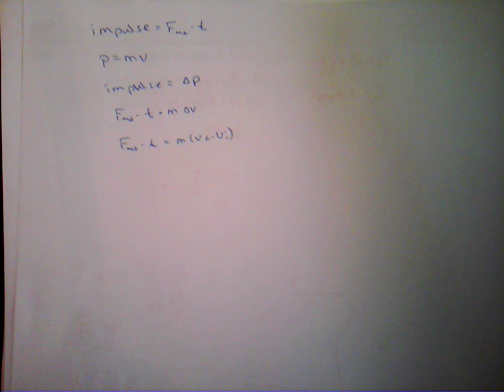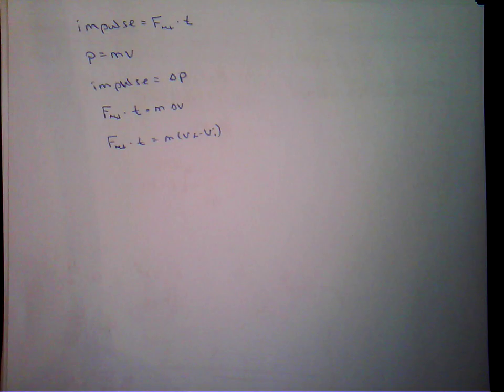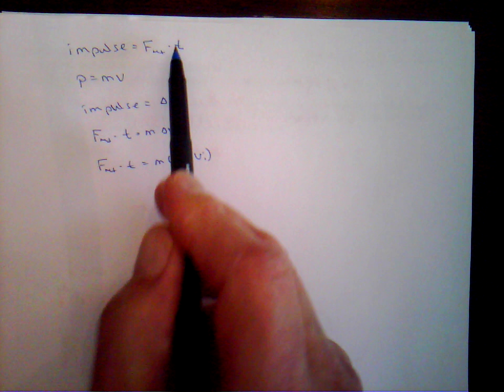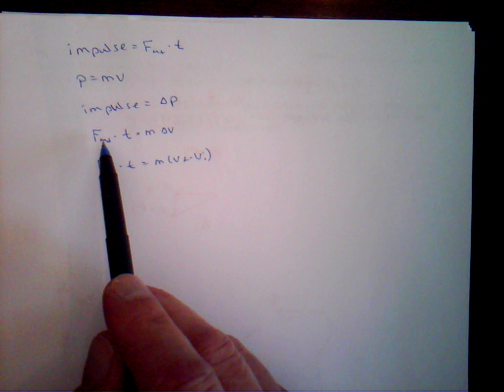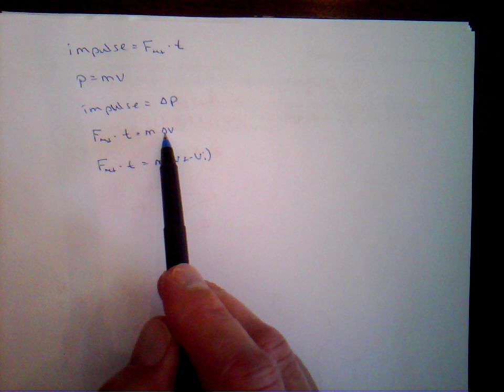These are some of the equations we derived. Impulse equals net force times time, or change in time. Momentum — the variable lowercase p — represents momentum, equal to mass times velocity. Impulse is equal to a change of momentum, because this triangle represents change. Also, net force times time is equal to mass times change of velocity, which can be written as mass times v-final minus v-initial. This equation and these three are actually the same equation. This is just the equation for momentum.